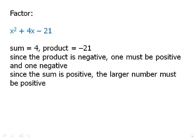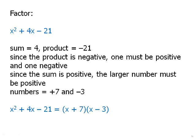If we have positive 7 and negative 3, those multiply to negative 21 and they add to positive 4. So, those are the two numbers that we're looking for, positive 7 and negative 3. And so, that means that we can factor this into (x + 7)(x - 3).